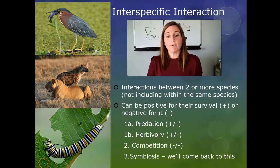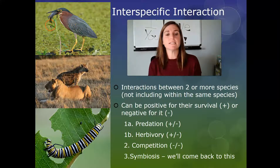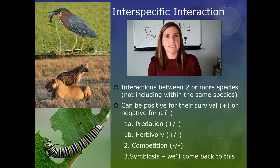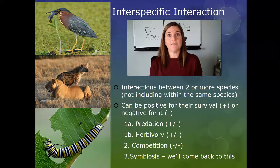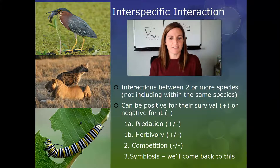For example, when we talk about predation, we have a picture of a bird eating a fish. This is an example of predation, and it is considered positive-negative: positive for the bird because it gets some food, and negative for the fish because now it's dead.